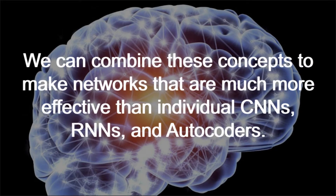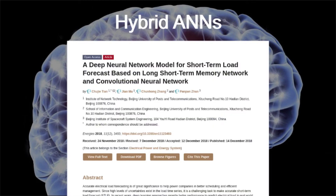On their own, these kinds of networks are all better than a traditional fully connected neural network. But the theory is that you can combine these concepts to make neural networks that are way more effective than individual versions. This concept is called a hybrid artificial neural network, and it's a pretty new concept that is really just being explored recently. Here's the main academic article that inspired this — it's called 'A Deep Neural Network Model for Short-Term Load Forecast Based on Long Short-Term Memory Network and Convolutional Neural Networks.'